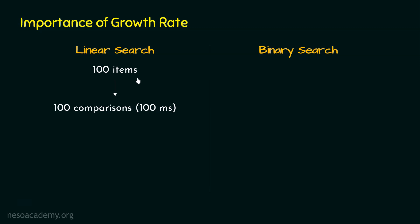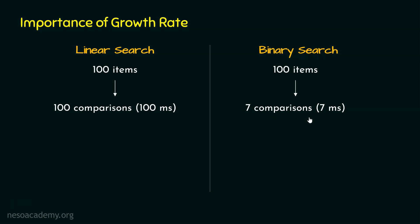What about binary search? In case of binary search, if we have 100 items, then it takes only 7 comparisons to come to the conclusion whether the key is found or not. This is what we saw in the last lecture. The time it takes, therefore, is 7 milliseconds.